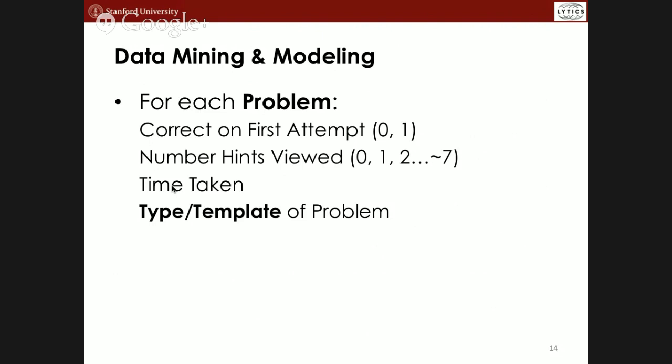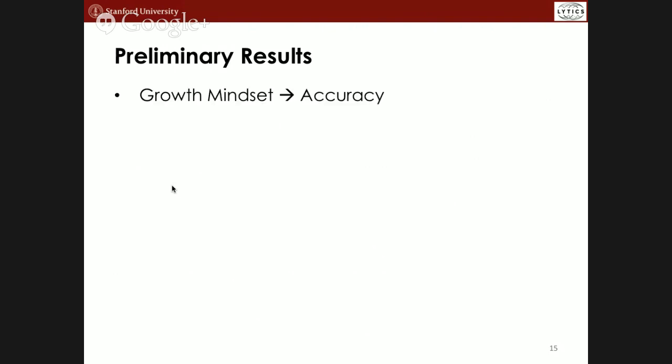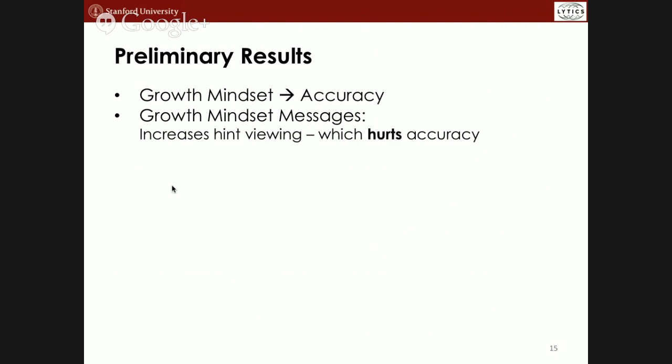Looking at accuracy on a particular problem based on other variables, and how the growth mindset experiment variables interact with other features: growth mindset messages increase accuracy. What's interesting is they also increase the chances that people request a hint. This is especially interesting because being more willing to request help actually hurts accuracy in this context — getting a hint is graded as wrong. So any benefit of growth mindset messages to learning is happening even though people are more likely to ask for help.